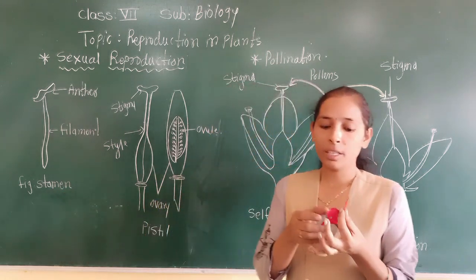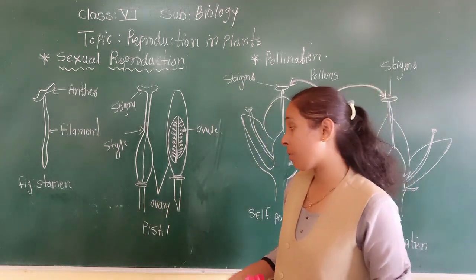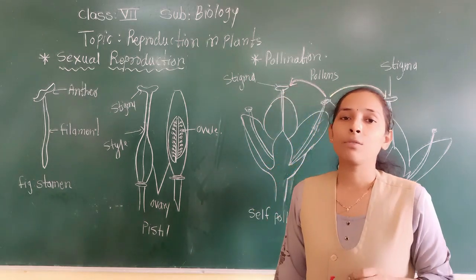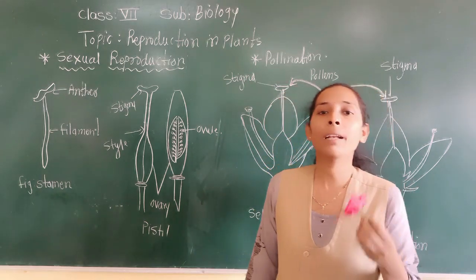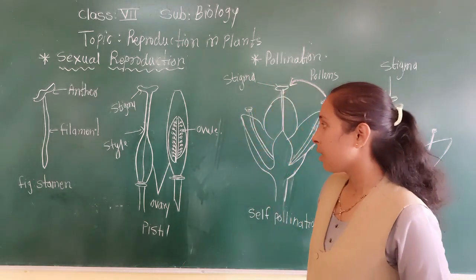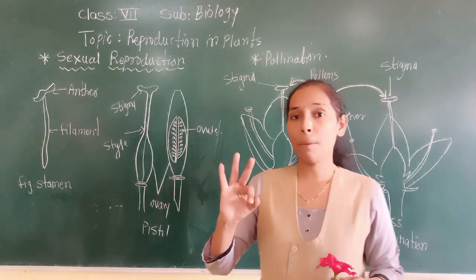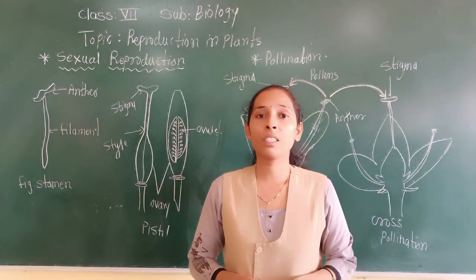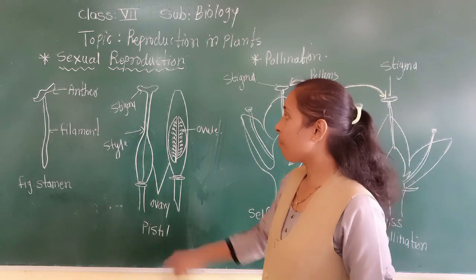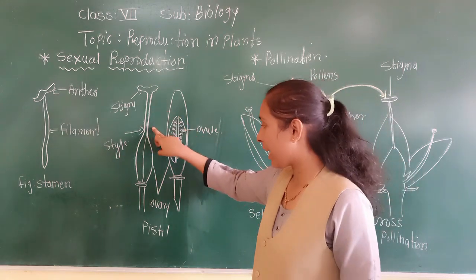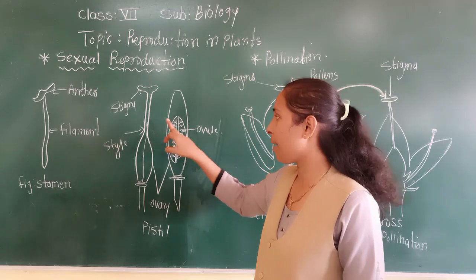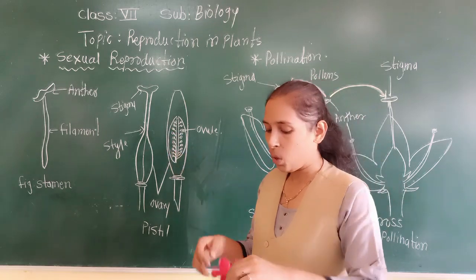Now we will move to the next part of a flower — the pistil, which is the female reproductive part of a flower. The pistil consists of three parts. The pistil is made up of three parts: stigma, style, and ovary.